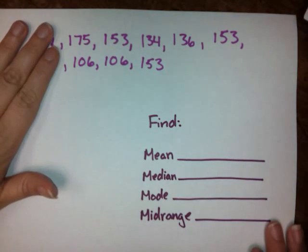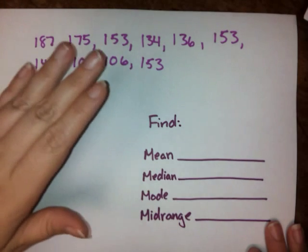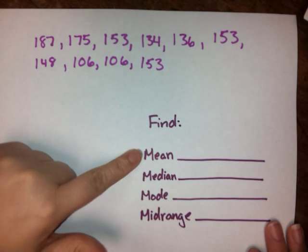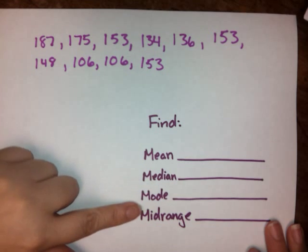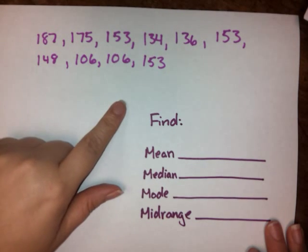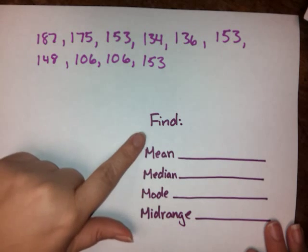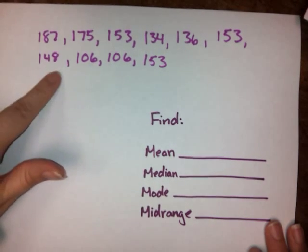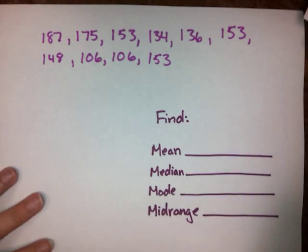I've got some data here at the top of my page, and I want to find all of these things about the data. I want to find the mean, the median, the mode, and the midrange, based on the data that's given to me here. The first thing I want to do, if I'm looking for all of these things, is put my numbers in order.